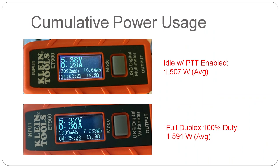Power consumption will vary somewhat based on which USB audio devices you use, but this should be typical. Note that this is with HDMI disconnected and nothing connected to the USB ports other than the two USB audio devices, as this is the most representative battery-powered configuration. The full duplex 100% duty cycle data was captured in the 700E mode, which seems to use a bit more power than the 2400B mode. Power usage for the 700D mode is similar.